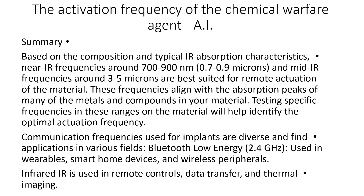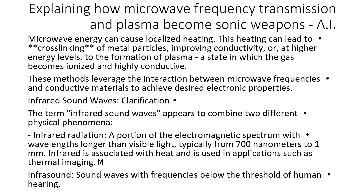Infrared (IR) is used in remote controls, data transfer, and thermal imaging. Explaining how microwave frequency transmission and plasma become sonic weapons — AI: microwave energy can cause localized heating. This heating can lead to cross-linking of metal particles, improving conductivity, or at higher energy levels, to the formation of plasma, a state in which the gas becomes ionized and highly conductive. These methods leverage the interaction between microwave frequencies and conductive materials to achieve desired electronic properties.